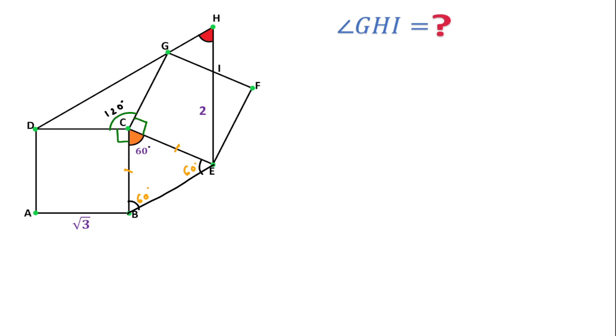Also, this is the side of the square, so this side and this side are also equal. This means this angle and this angle are equal. Since this is 120 degrees, this angle will be 30 degrees, 30 degrees, so that the sum of these three angles - 30, 120, and 30 - is equal to 180 degrees.